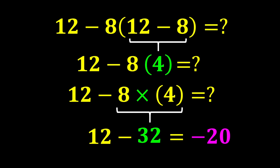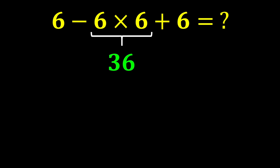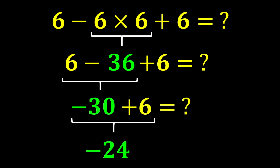Second example: 6 minus 6 times 6 plus 6. In this expression, we have a subtraction, a multiplication, and an addition. Multiplication has a higher priority than addition and subtraction, so we first calculate 6 times 6, which gives 36, and the expression becomes 6 minus 36 plus 6. Now we have both subtraction and addition. Moving from left to right, we first encounter the subtraction: 6 minus 36 gives negative 30. Finally, negative 30 plus 6 gives negative 24, and negative 24 is our final answer.